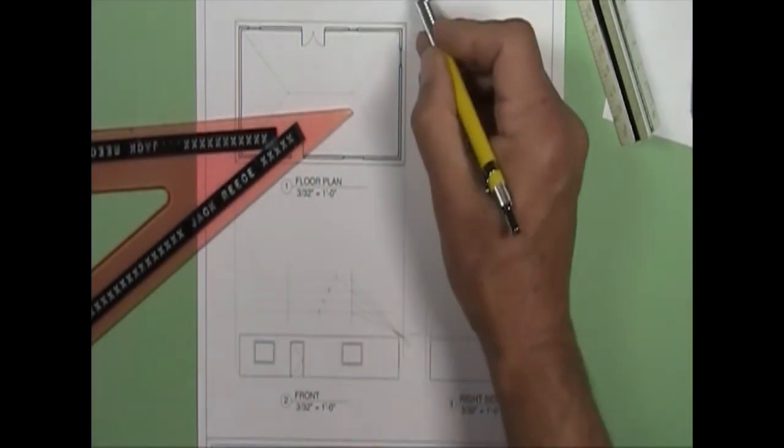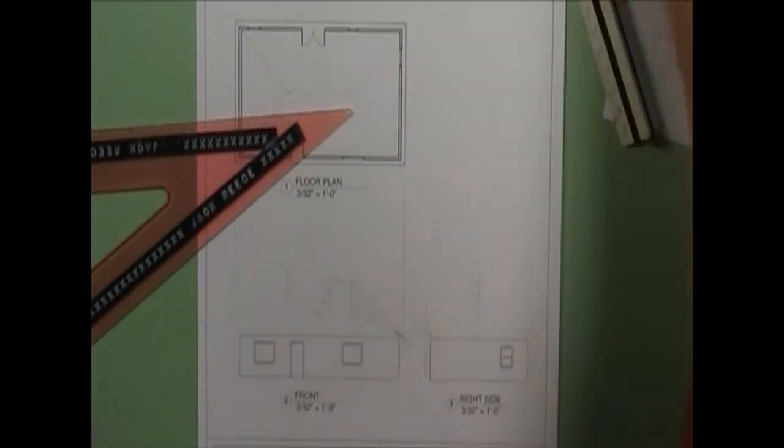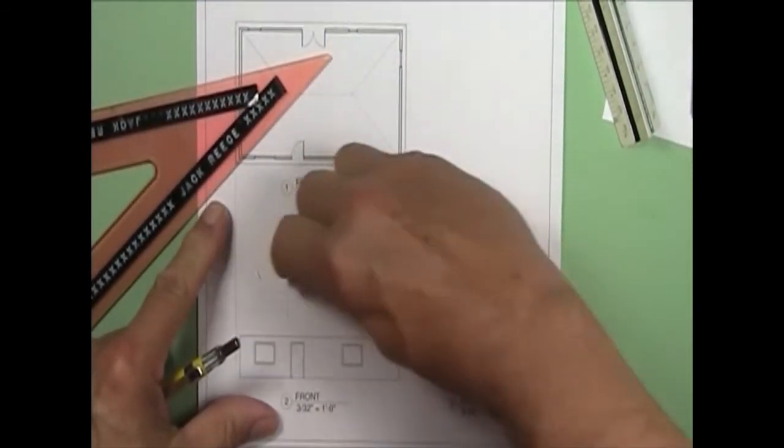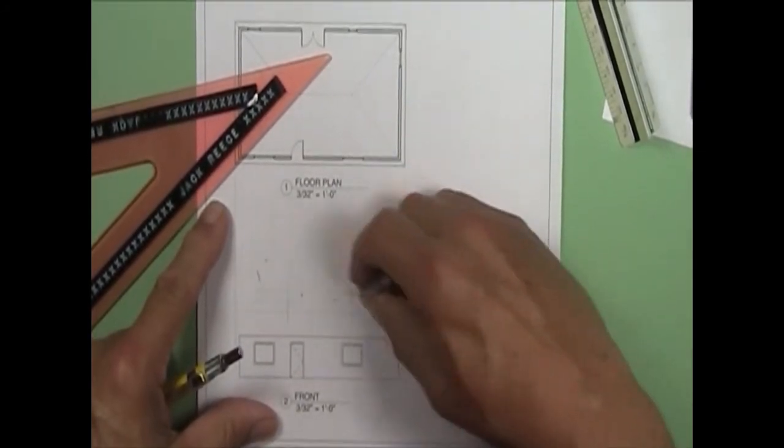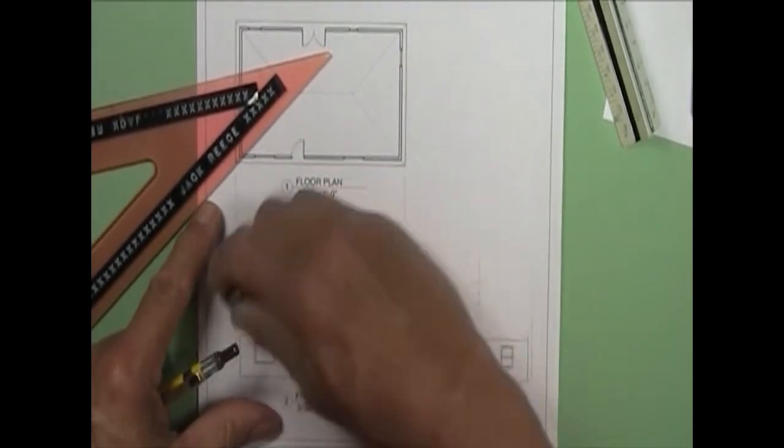But the assignment says do an 8/12 hip roof. So that's what you're going to do, alright? So I'll take the 10 out at the top there. Kind of clean things up just a little bit.